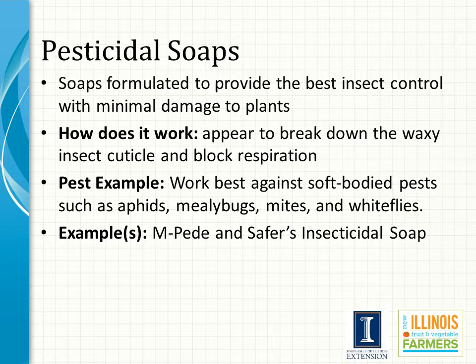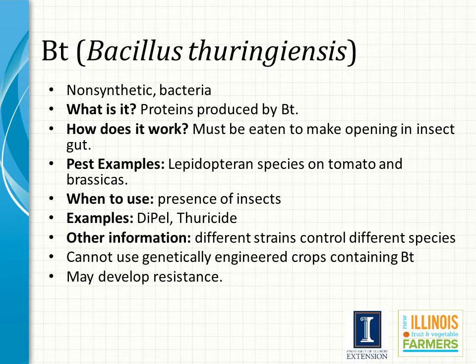Soaps are those that have been formulated to provide the best insect control but also have minimal damage to plants. In general, soaps break down the linings of the insect cuticle and then block out breathing of the insect. Because of this action, soaps mostly work for soft-bodied pests such as aphids, mealybugs, mites, and whiteflies. Some examples of a soap include Imped and Safer's insecticidal soap.